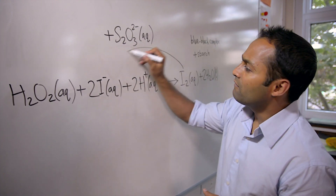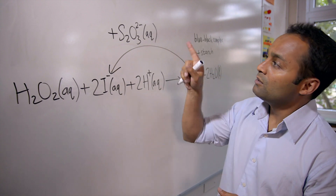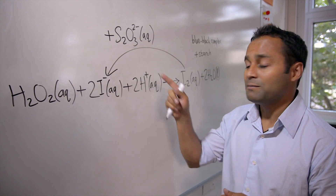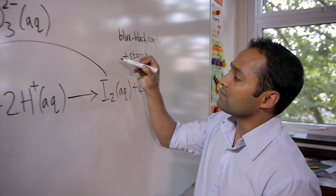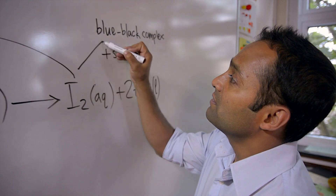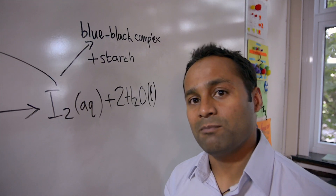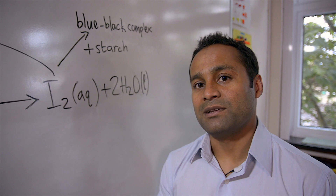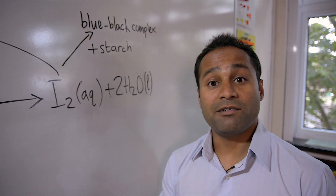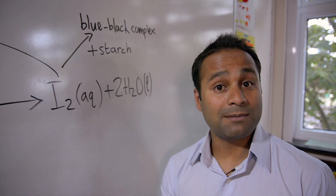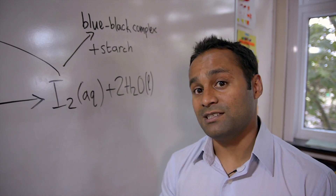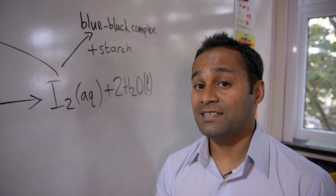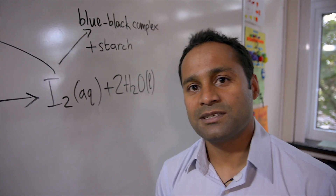This happens by a very quick reaction. Once the thiosulfate ions are used up, the iodine reacts with starch to give you the familiar blue-black complex. The time taken for this colour change to happen can be varied by changing the concentrations or the temperatures of the reagents. So theoretically, a clock of any time interval could be produced.